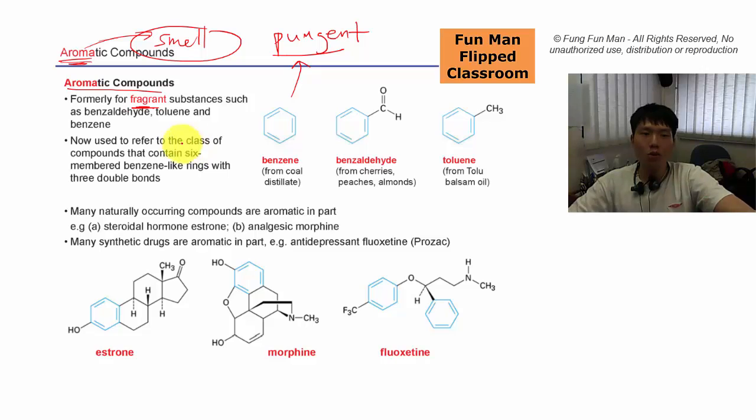In contemporary chemistry, we use the term aromatic compounds to describe a class of compounds that contain six-member benzene-like rings with three double bonds. Benzene is from coal distillate.